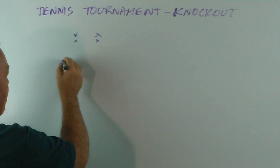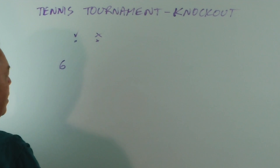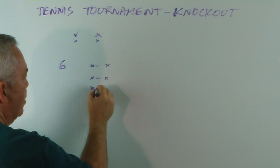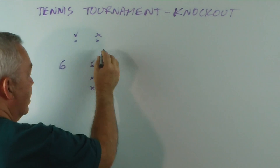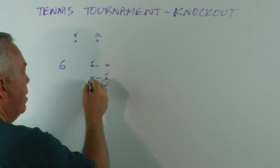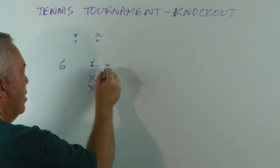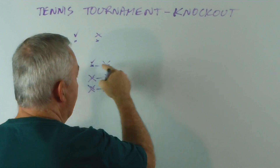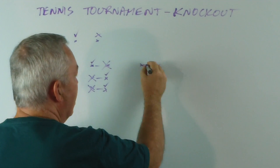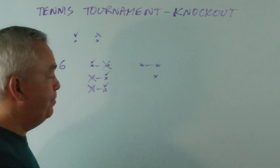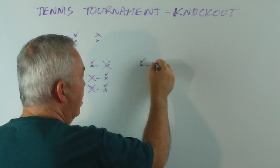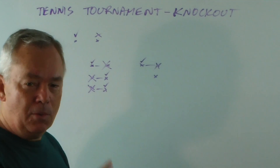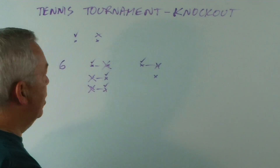So if we started with, for example, six people, we might have three games played. These two play, these two play, and these two play. One person might win, that might win, and that one might win. These ones lose and are no longer playing. After these three games, these three people go on — two of them might play, one might have to wait. There'll be a winner and a loser, and then the winner will play that person, and eventually we end up with one winner overall. That's a knockout competition.